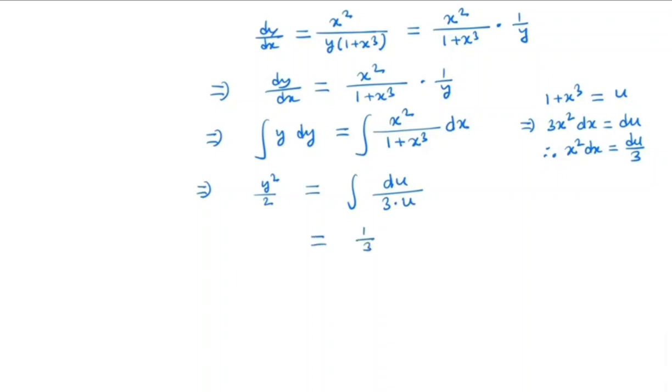So we have (1/3) ln|u| + c, and what is u? u is 1+x³. So y²/2 = (1/3) ln|1+x³| + c. So this is the general solution to the ODE.